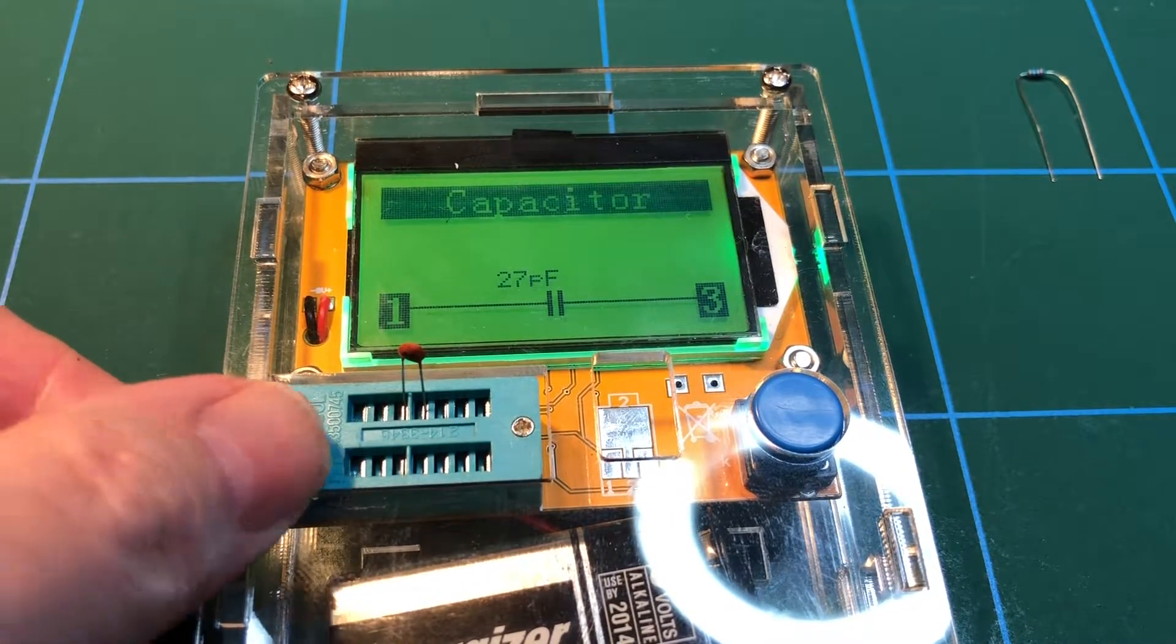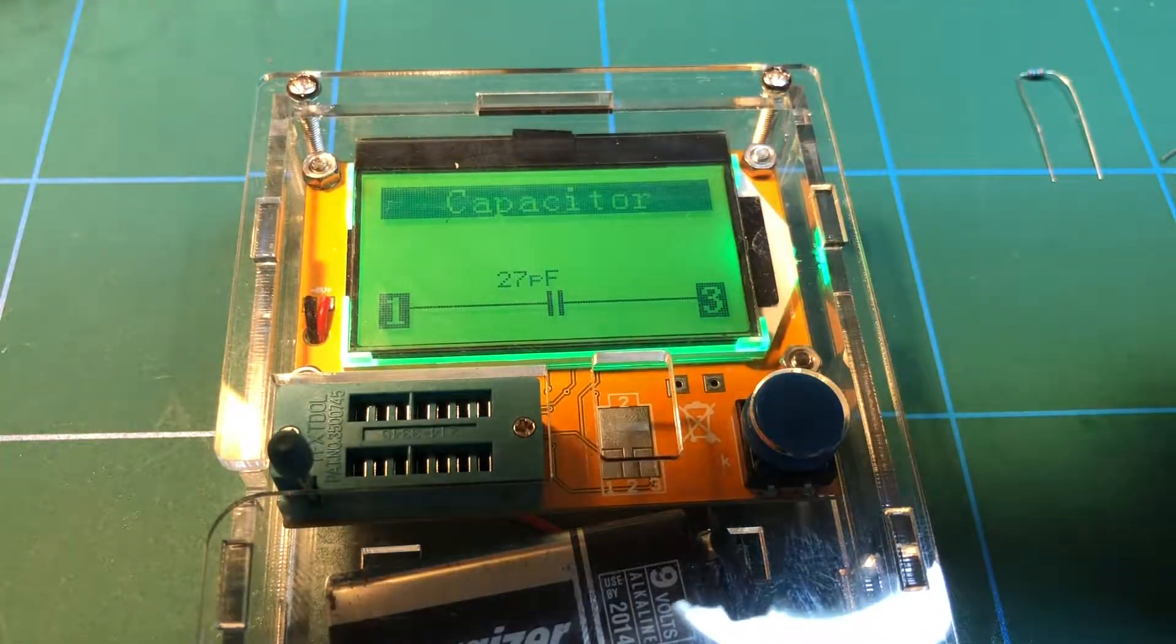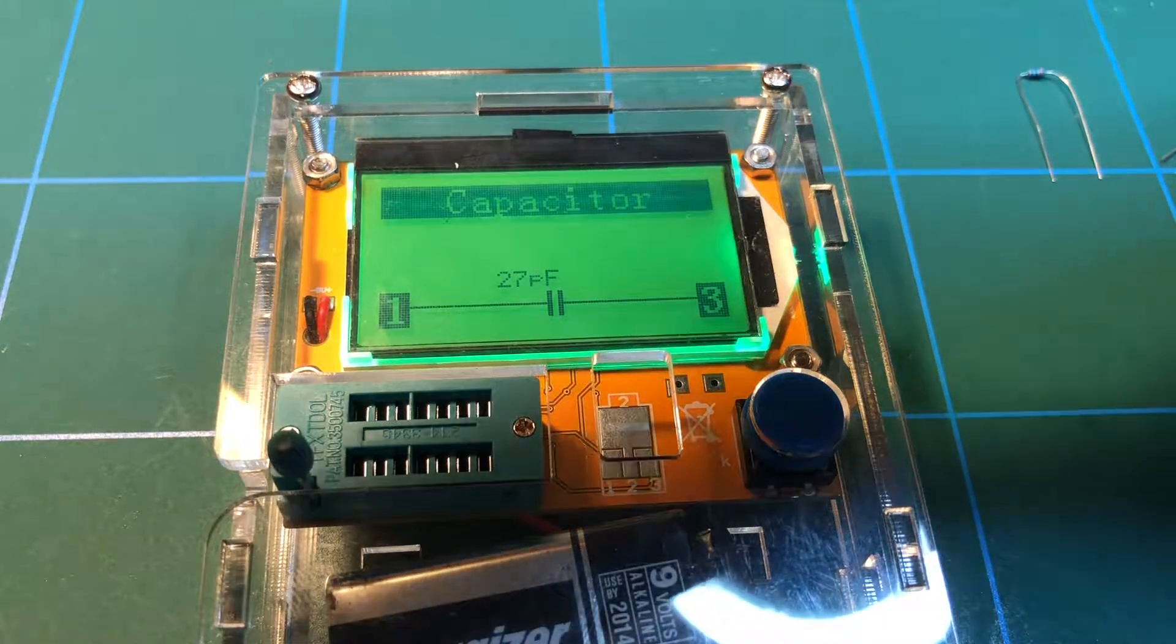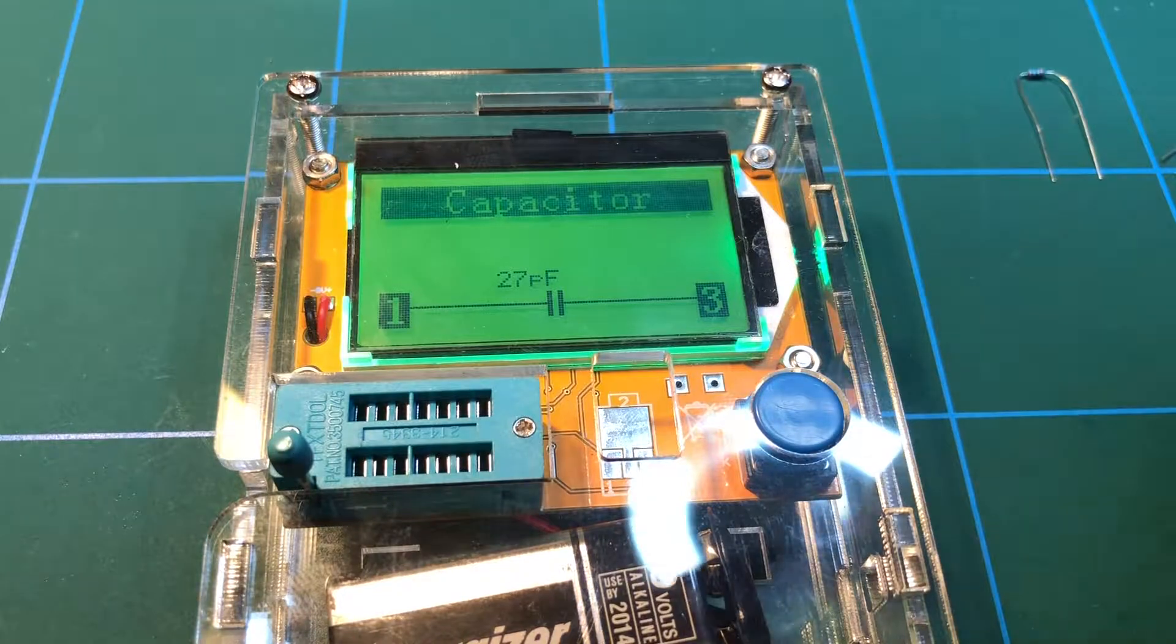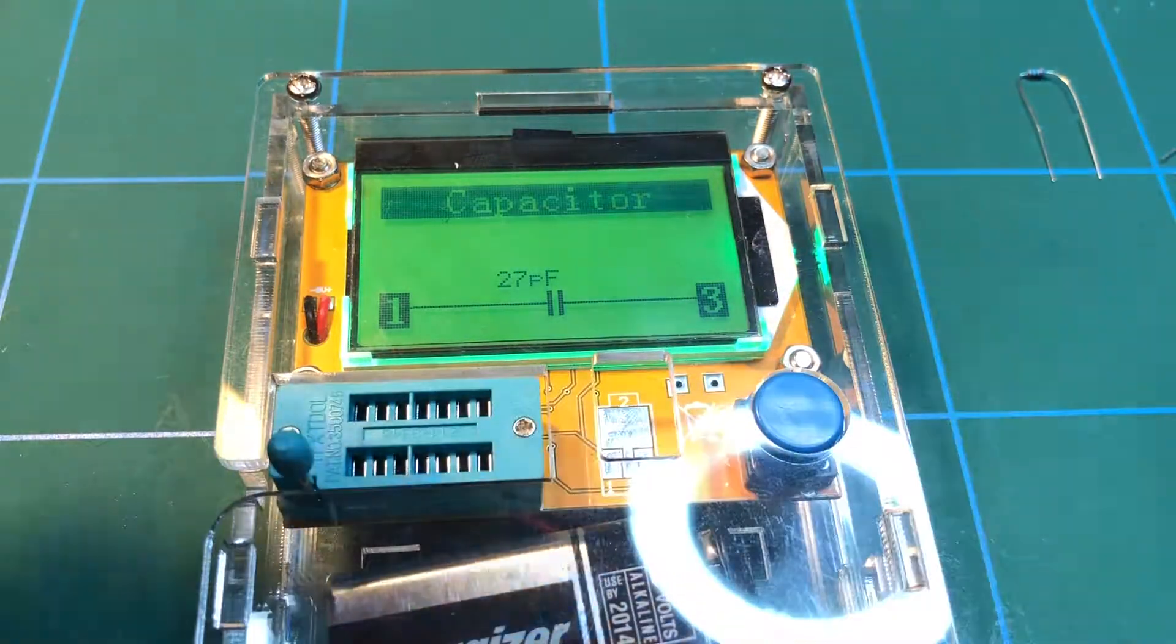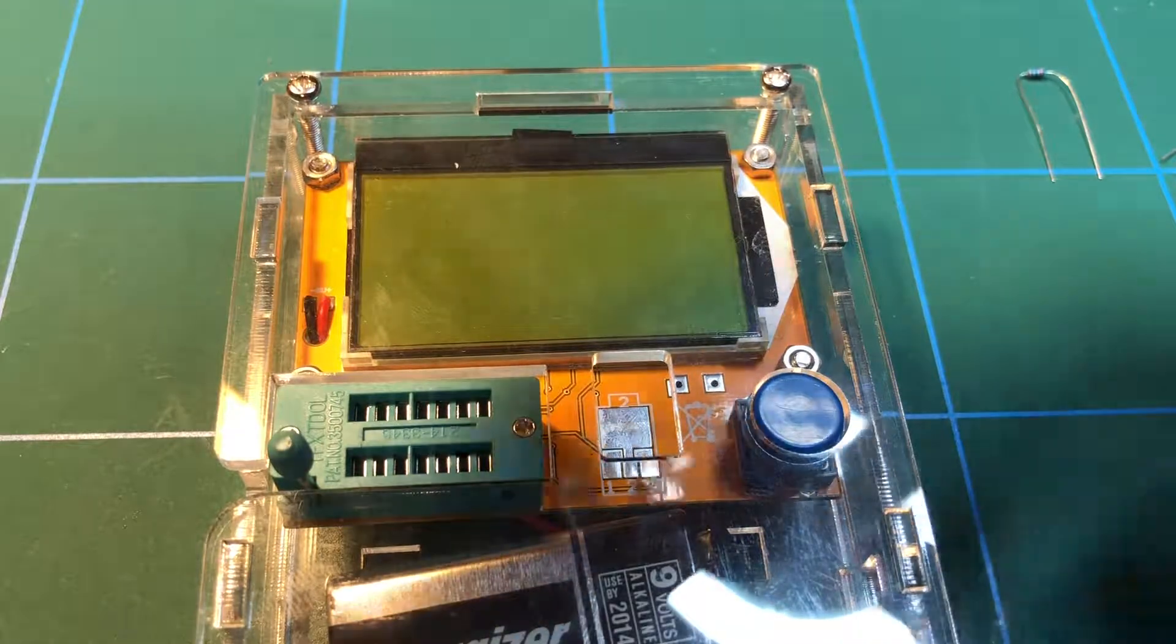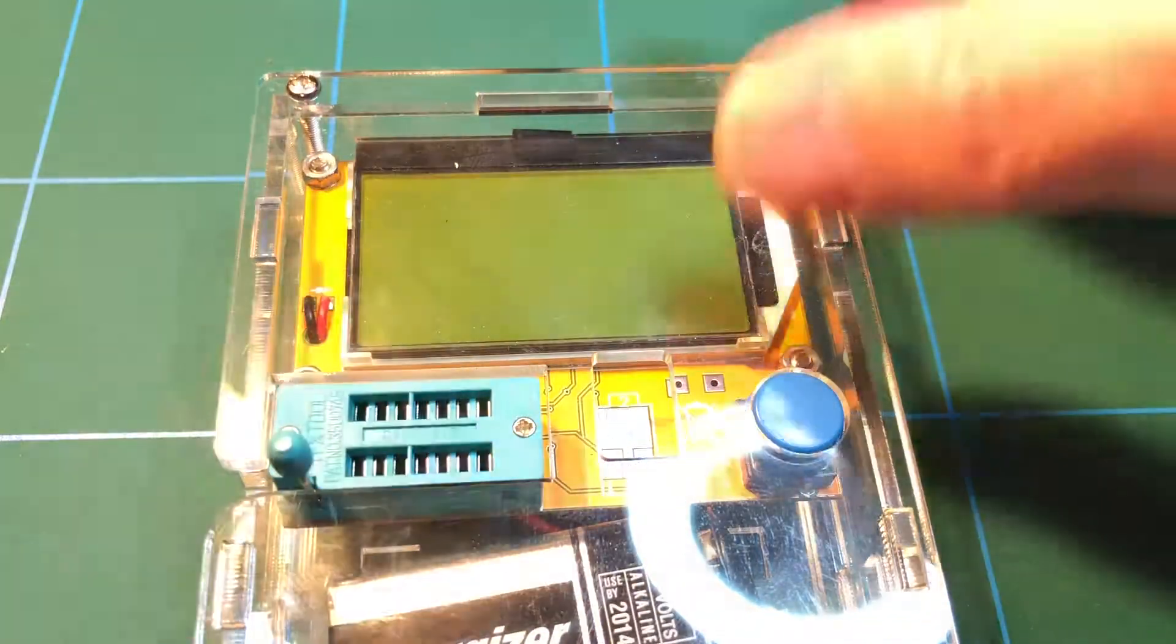Now it'll do transistors. It'll do diodes. Oh actually, that's interesting. I have some transistors here. I didn't realise I had those. Just suddenly caught those in the corner of the eye. So let's grab a transistor. I'm not sure which holes it's supposed to go in.